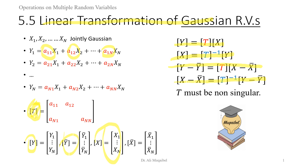The T matrix must be non-singular for our solution to work, because to find Y we need to find the inverse transformation, and that requires the transformation matrix to be non-singular.